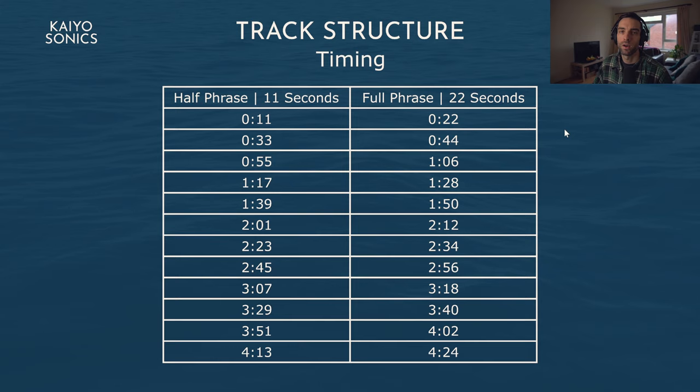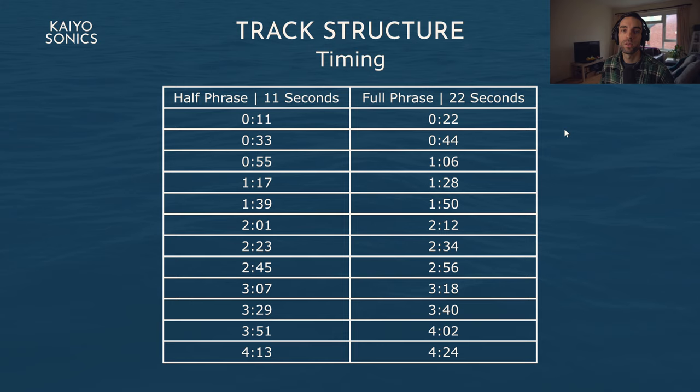When mixing, setting all tracks to the same BPM — usually 87 or 174 — means all phrase timings will be the same, reducing the need to think about what BPM you're at constantly. Each time you load a new track you just set it to the same BPM. This is completely down to personal preference, depending on what tempo you prefer to play at and whether you want to increase or decrease the energy during your sets or mixes.